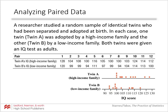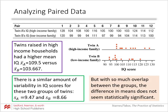Here you can see we have the data for the 12 sets of twins, and we have a dot plot for the IQ of the twins adopted by high-income families and those adopted by low-income families. Twins raised in high-income households had a higher mean IQ of 109.5 versus those raised in lower-income families who had an average IQ of 103.667. That doesn't seem like a big difference, and looking at the overlap between these two dot plots, it doesn't seem like there's really that much difference.